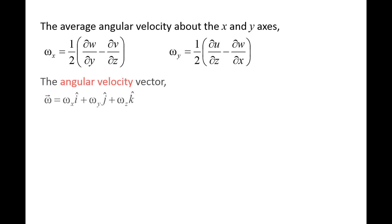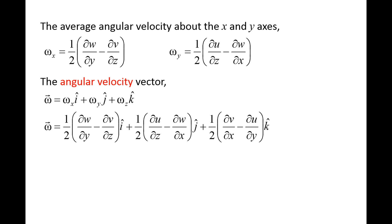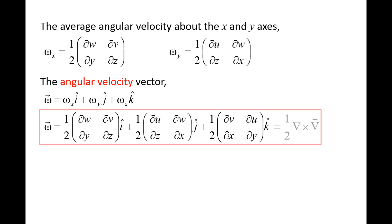Using the three expressions for angular velocity about the x, y, and z axes, we can construct an angular velocity vector omega, which is equal to omega x i-hat plus omega y j-hat plus omega z k-hat. Recalling the definition of the curl of a vector, you can show that the angular velocity vector is simply one-half the curl of the velocity field. This means the curl operator picks out the portion of the velocity field that causes rotation.